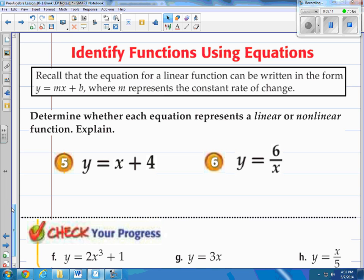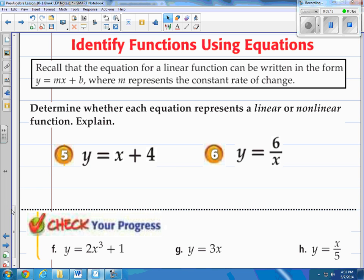Alright, the last section: Identifying functions using equations. Recall that equations for a linear function can be written in the form Y equals MX plus B. We call that the slope Y-intercept form where M represents the constant rate of change. We call that slope.